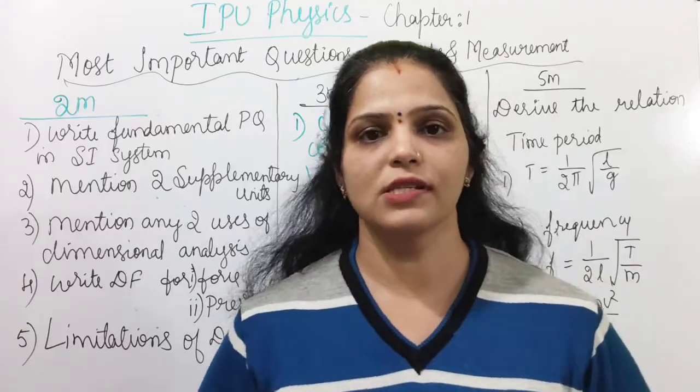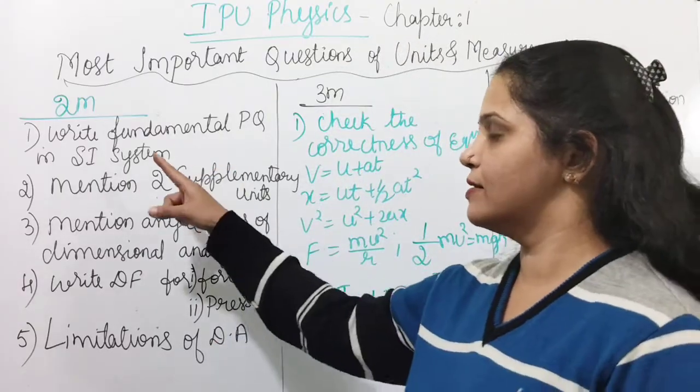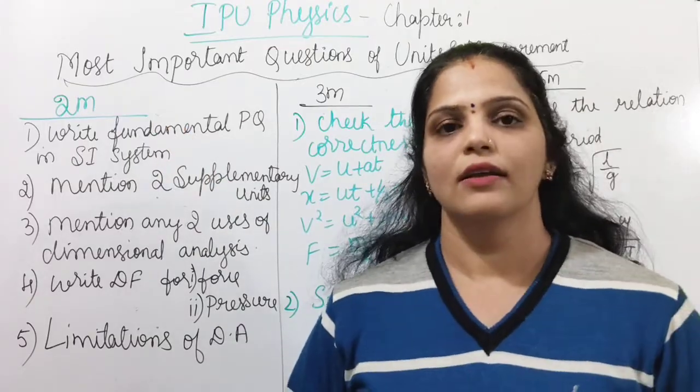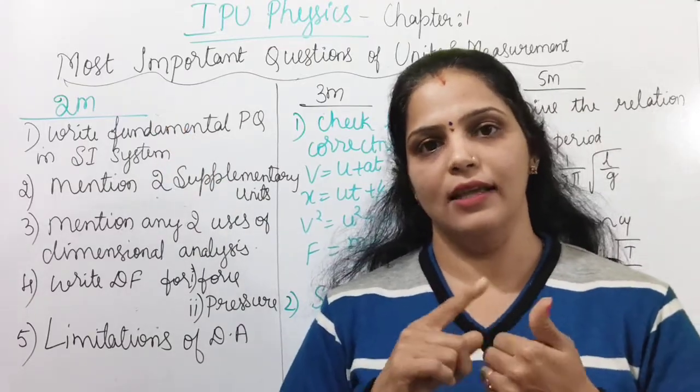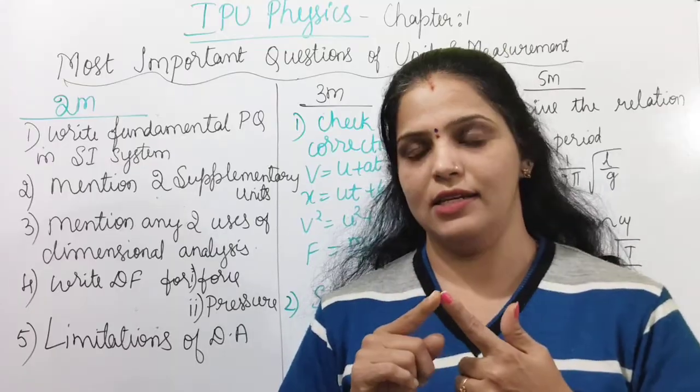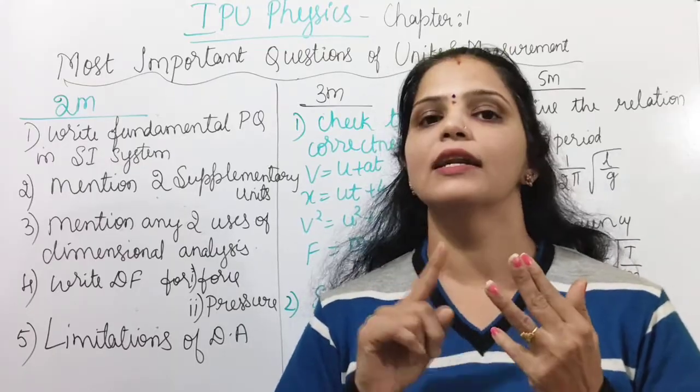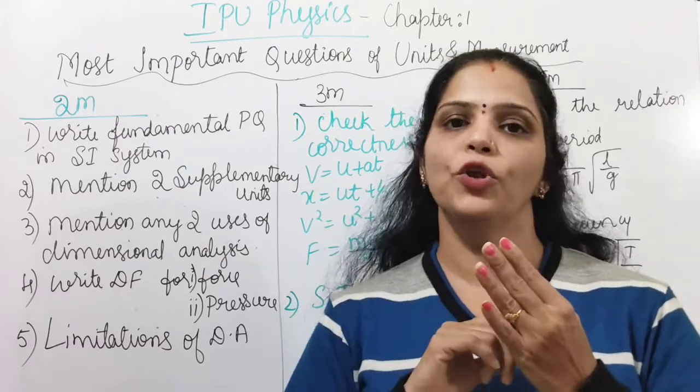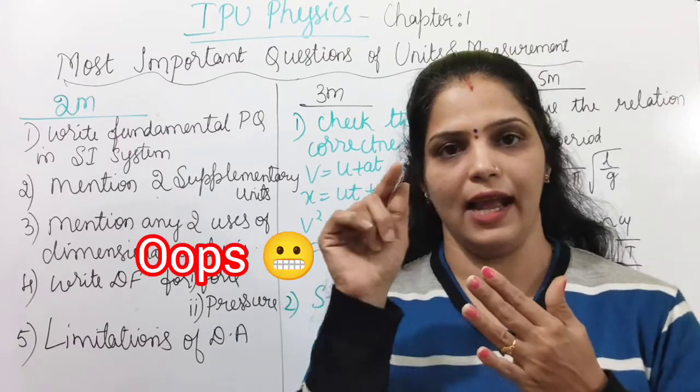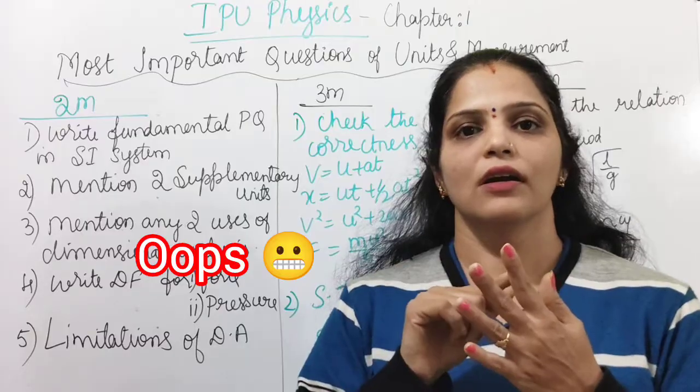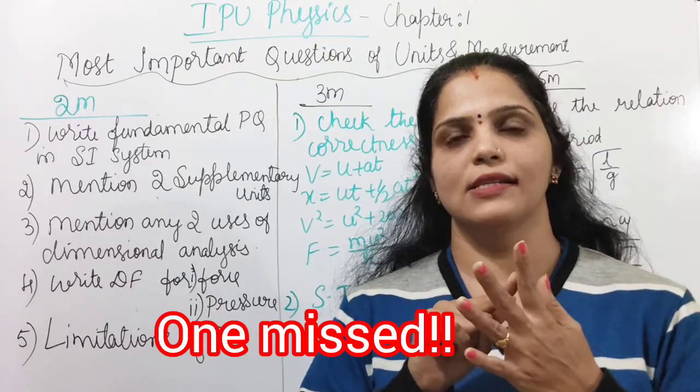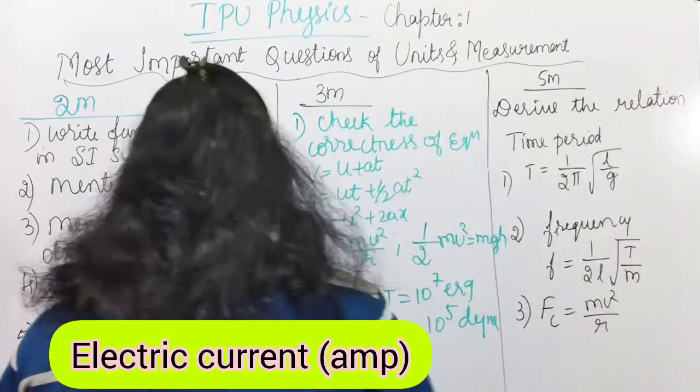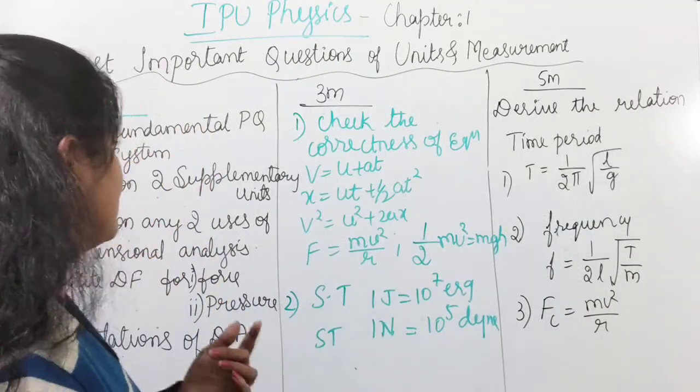So the most important questions of 2 marks is write fundamental physical quantities in SI system. The answer is mass in kg, length in meter, time in second, temperature in Kelvin, amount of substance in mole, luminous intensity in candela. So these are the important physical quantities.